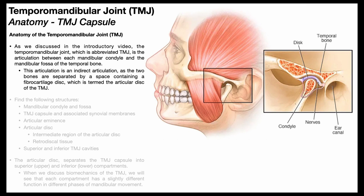We introduced some terminology in the introductory video to this playlist. We mentioned that the temporomandibular joint itself is abbreviated the TMJ. TMJ is the actual joint — it's an anatomic structure. But if we're talking about pain associated with the TMJ or dysfunction of the TMJ, then we're talking about TMD, temporomandibular dysfunction. So TMD is the syndrome; TMJ is the anatomic structure.